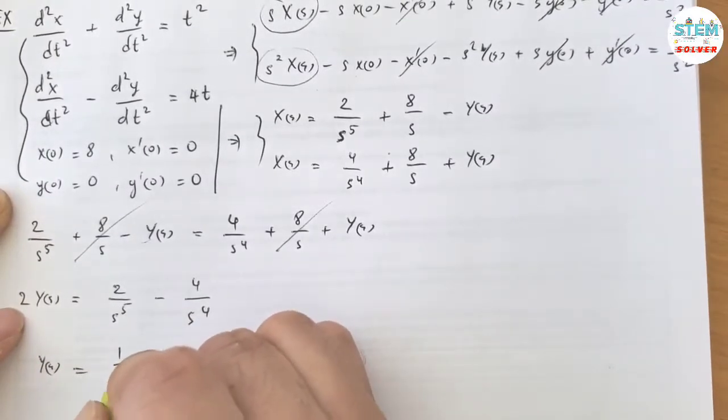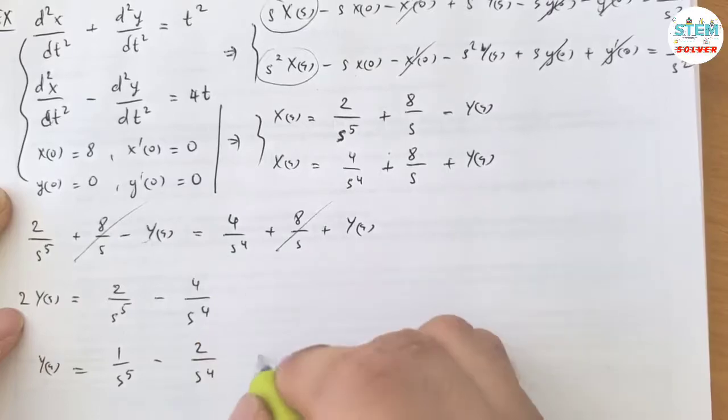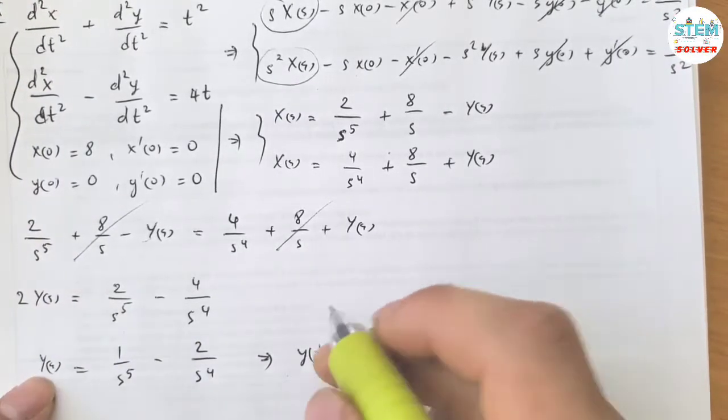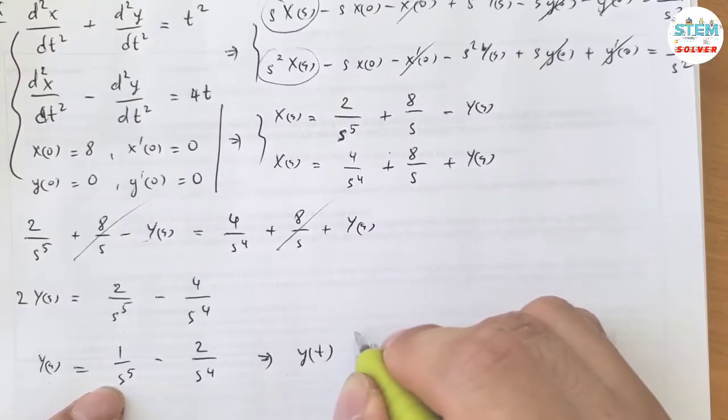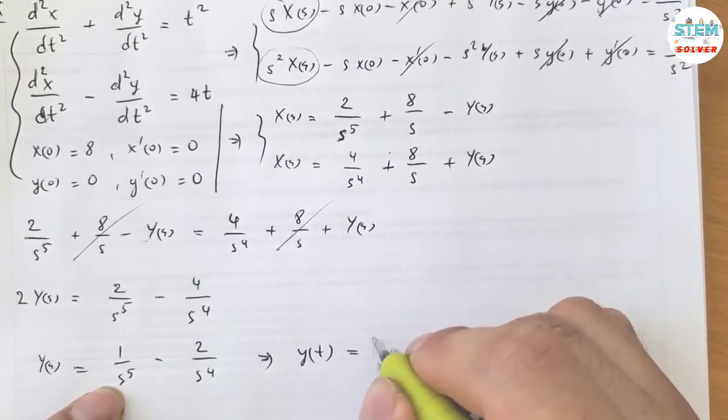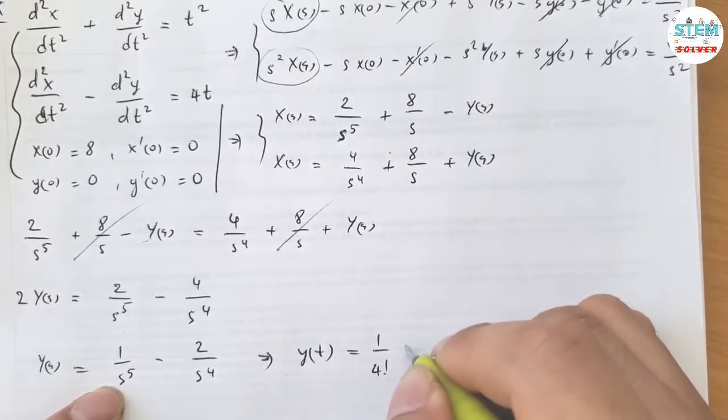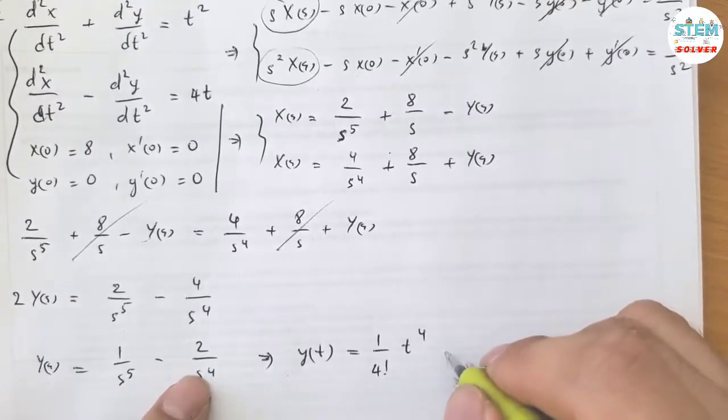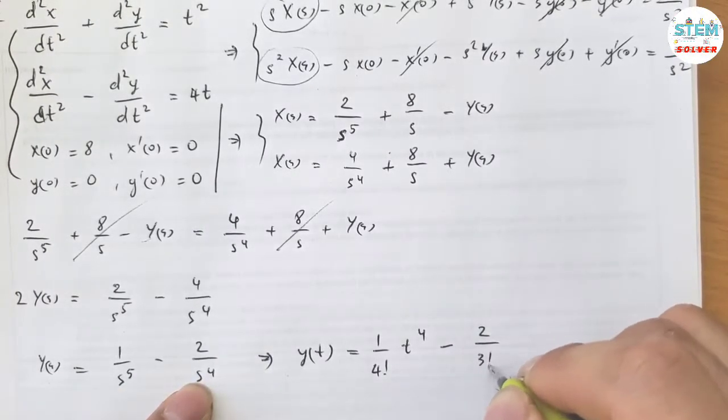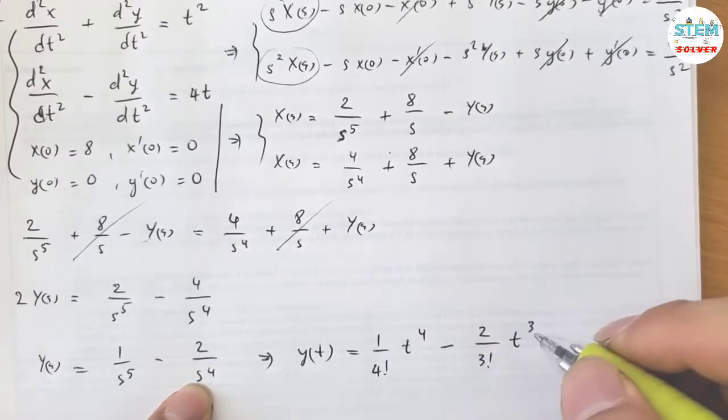So I have 1 over s to the fifth minus 2 over s to the fourth. Then apply the inverse on both sides. I have y(t) equals 1 over 4 factorial times t to the 4, minus 2 over 3 factorial times t cubed.